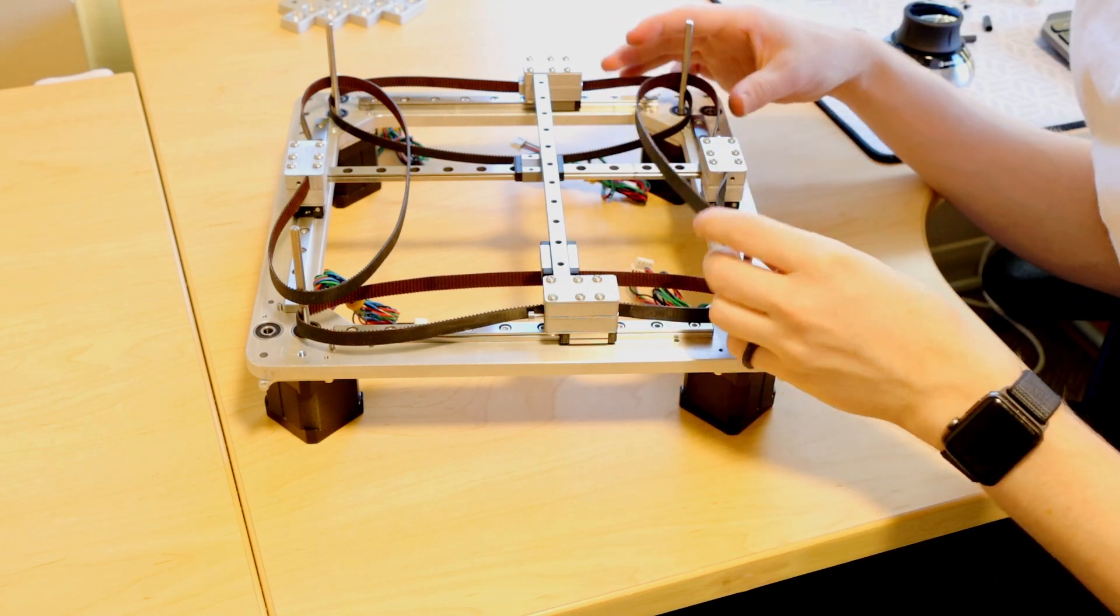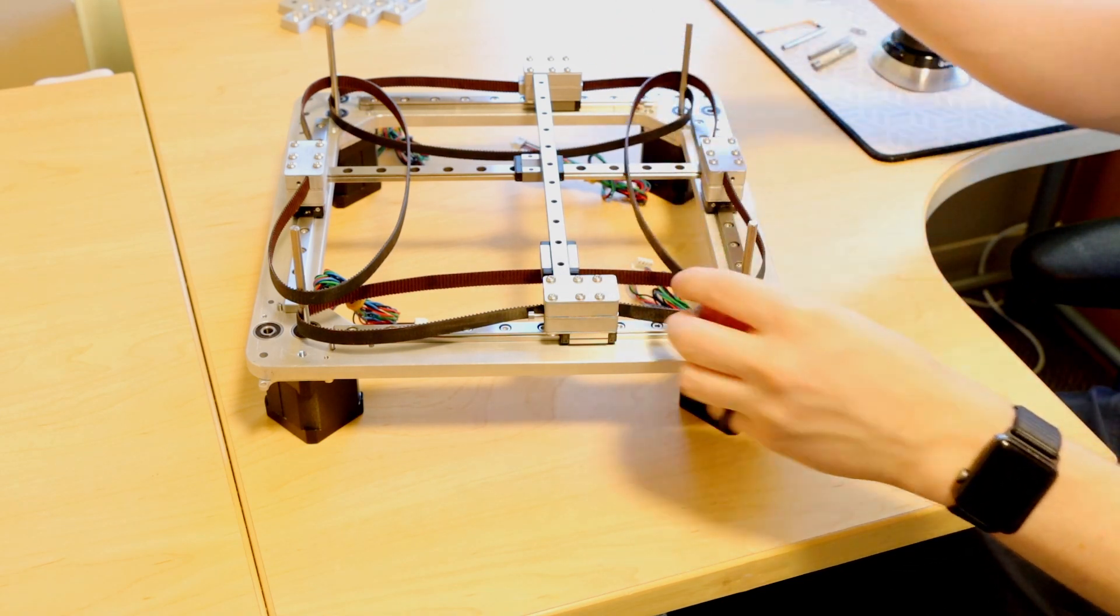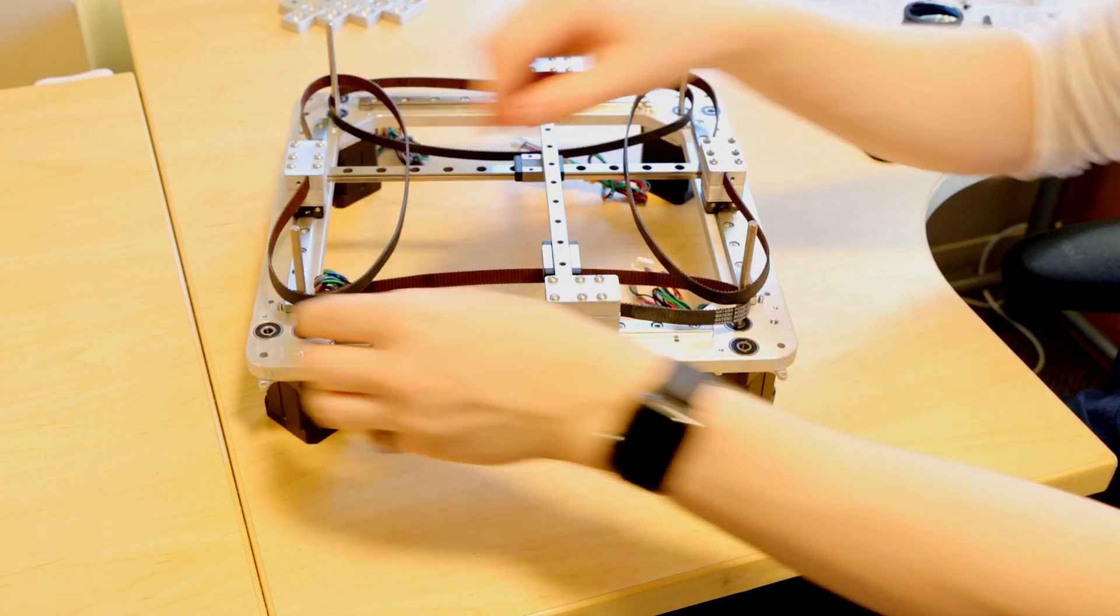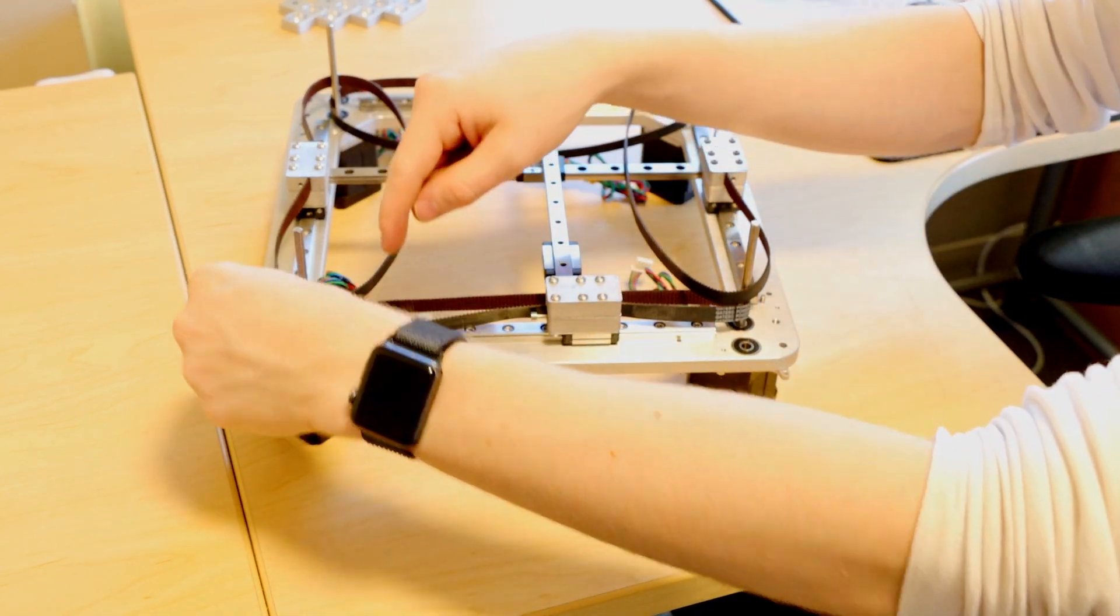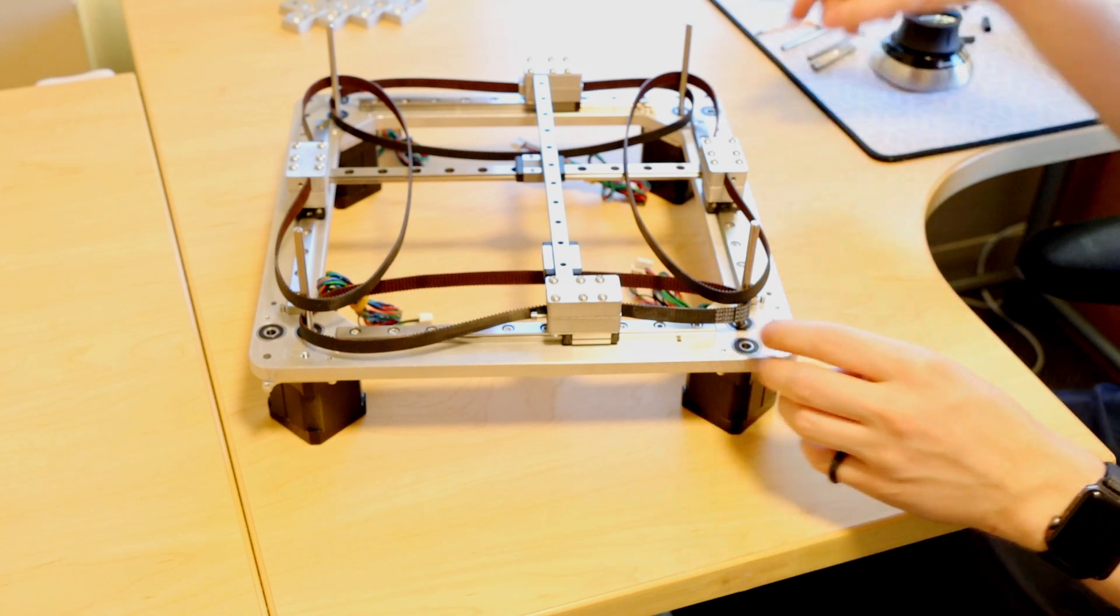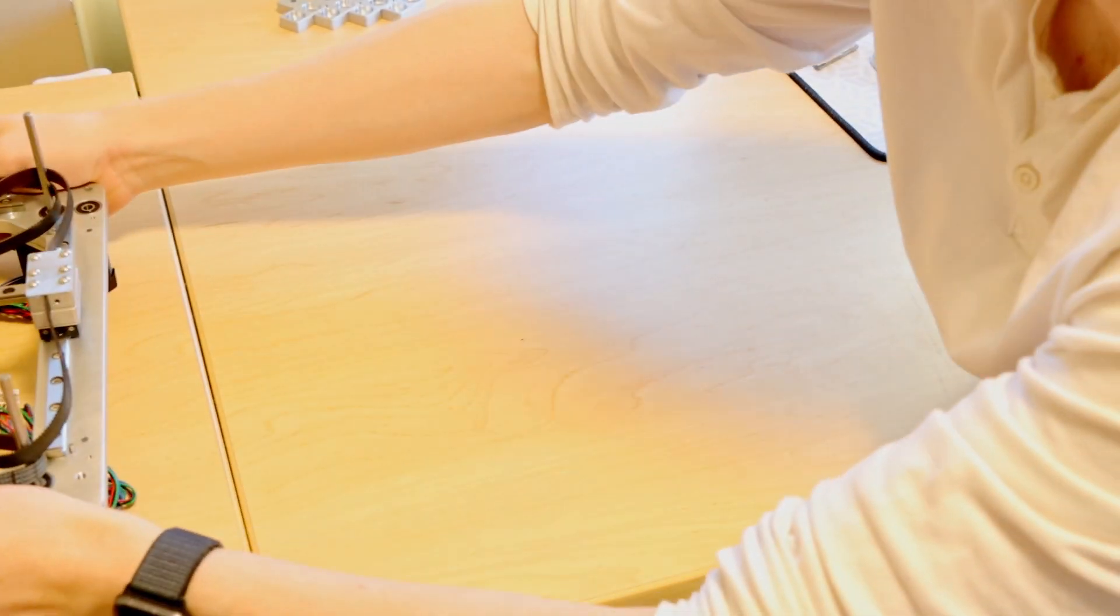So hopefully you can begin to see how this is going to work. Essentially all the belts kind of will wrap around either one of the motors or one of the live idler shafts which will go in these other four corner bearings.